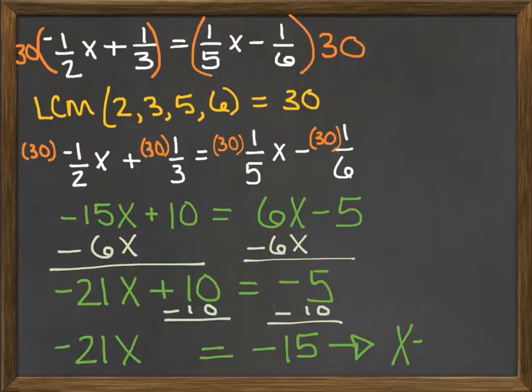Now to solve this, I want to divide both sides by negative twenty-one. This will give me negative fifteen over negative twenty-one, and negative fifteen over negative twenty-one reduces to positive five-sevenths. So x is equal to five-sevenths.